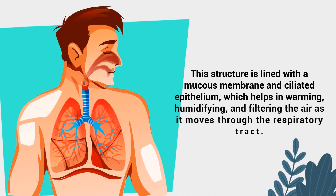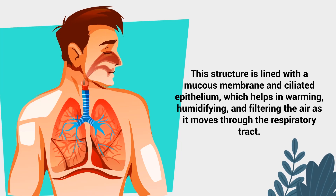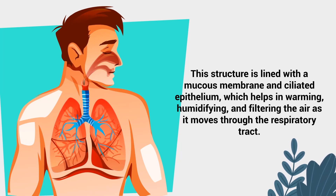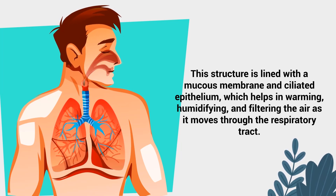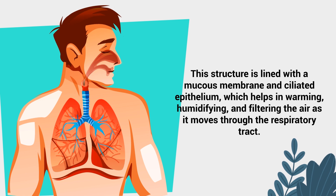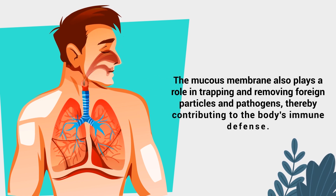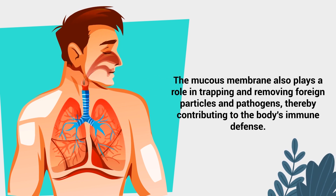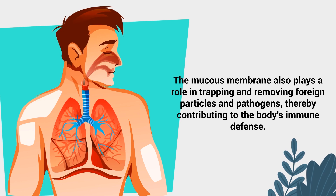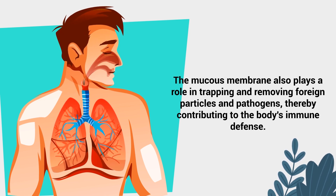The structure is lined with mucous membrane and ciliated epithelium, which helps in warming, humidifying, and filtering the air as it moves through the respiratory tract. The mucous membrane also plays a role in trapping and removing foreign particles and pathogens, thereby contributing to the body's immune defense.